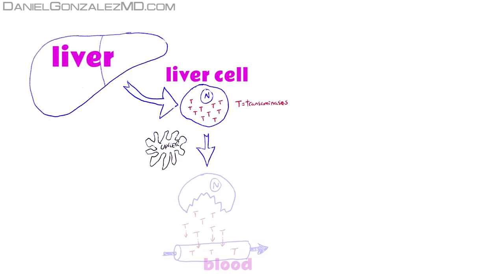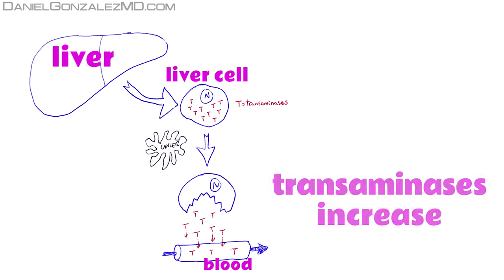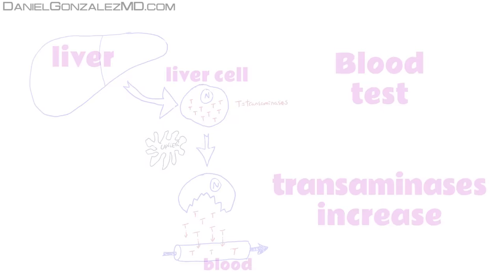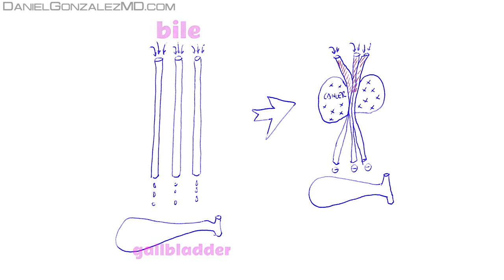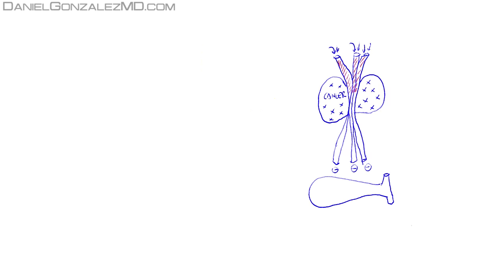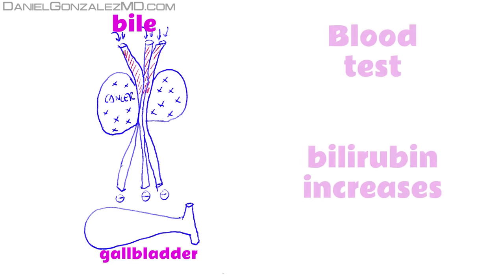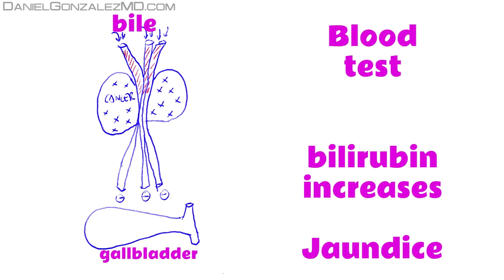thus increasing their levels, as detected in a blood test. If metastasis compress small channels that lead bile within the liver, the amount of bilirubin may increase in the blood. This can make the woman get a yellow tint in her skin, phenomenon called jaundice.